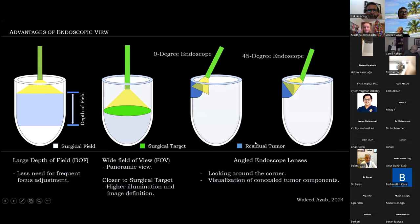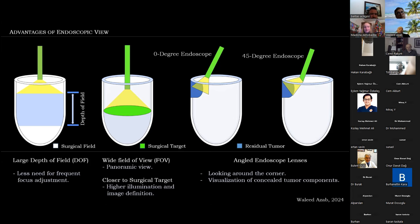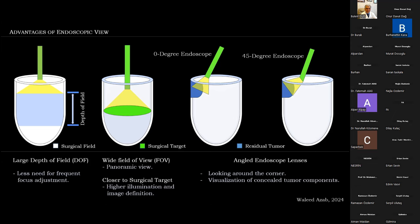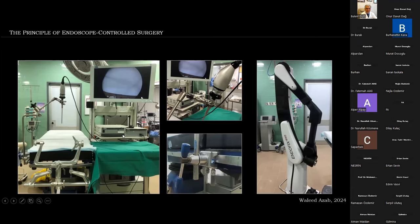As optical instruments, rigid endoscopes are characterized by a large depth of field, resulting in lesser need for frequent focus adjustment, and a wider field of view compared to the surgical microscope, providing panoramic views when operating. They are brought closer to the surgical target with higher illumination and image definition. Additionally, angled endoscopes enable looking around corners, visualization of concealed tumor components, and looking at perforators — a critical part of cranial microsurgery.